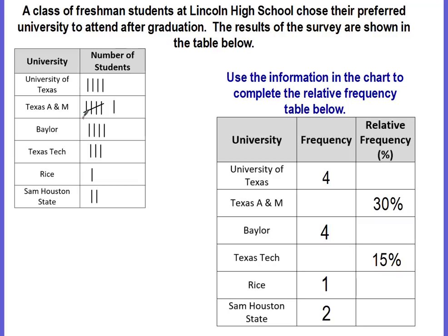We're going to use this information to complete a relative frequency table. For the University of Texas — four people chose it — so we write it in fraction form as a ratio of four to the total. Adding up: 4 plus 6 is 10, plus 4 is 14, plus 3 is 17, 18, plus 2 is 20. So it's four out of 20.